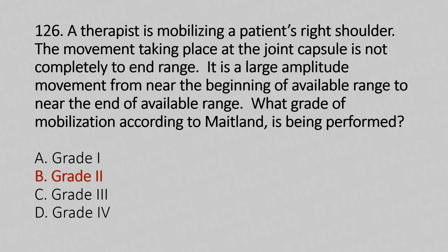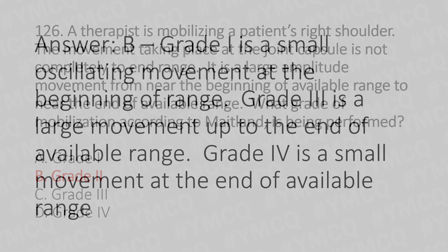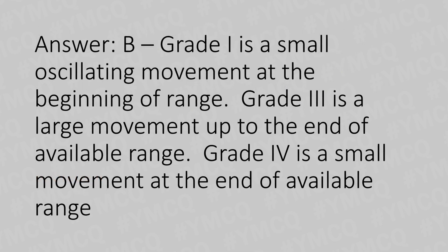Explanation: Grade 1 is a small oscillating movement at the beginning of the range. Grade 3 is a large movement up to the end of the available range. Grade 4 is a small movement at the end of the available range.